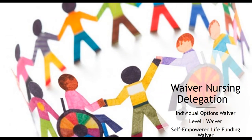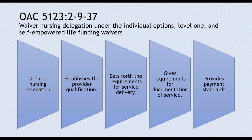We're going to go over that rule, as well as how you account for the reimbursement rate on your CPT and into your monthly waiver funding levels. You can access the rule through the Ohio Administrative Code 5123:2-9-37, and it will be in effect February the first.